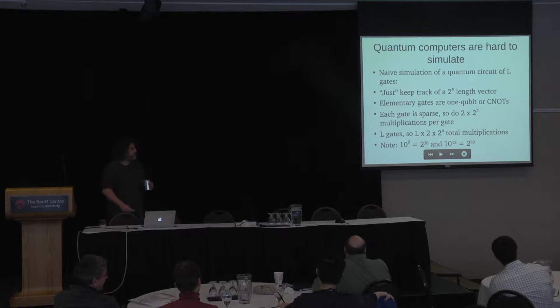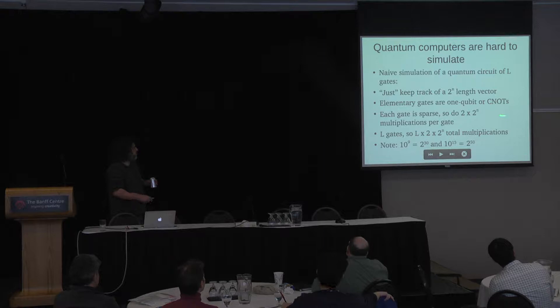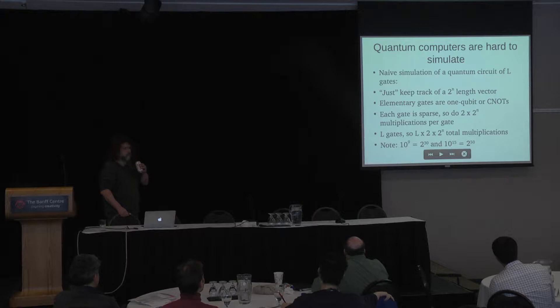We also know that quantum computers are hard to simulate. The obvious way to simulate them is to keep track of a vector of length 2^n. Elementary gates are one-qubit and C-NOT, which are sparse, so you do 2 times 2^n multiplications per gate, ending up with circuit-length times 2^n multiplications total. That lets you do any quantum computation on a classical computer.